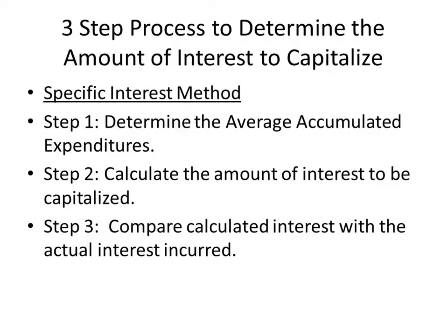If you have multiple buildings and some are placed in service and some aren't, this can become very confusing because you have to figure out what bills are related to the building that's not yet placed in service. If you're doing construction on an asset and it's not yet placed in service, that's the only time you have to capitalize interest. So you have to determine what your average accumulated expenditures were — what loan draws did we take out on that building being constructed for the period.